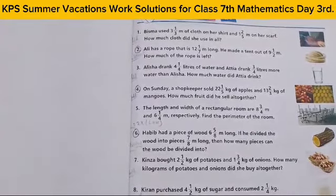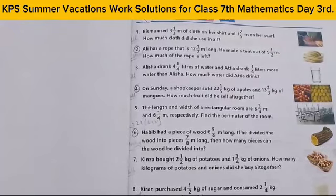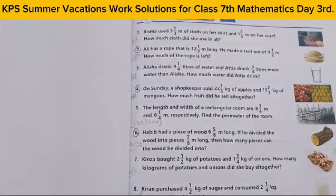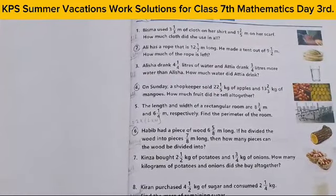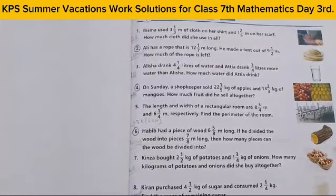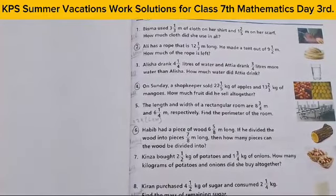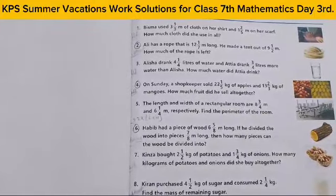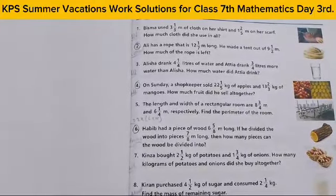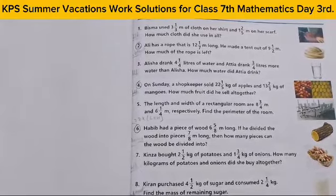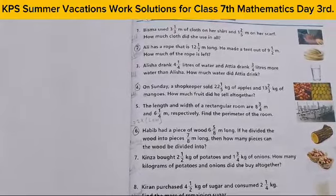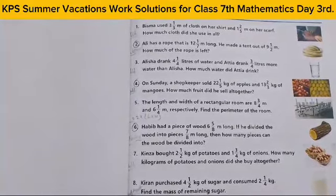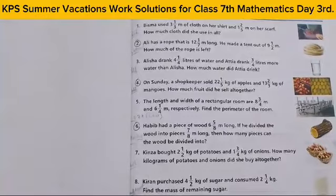آپ کا answer آ جائے گا۔ پھر آپ کے پاس question number 4: On Sunday a shopkeeper sold 22 and 1/5 kg apples and 13 and 2/3 kg of mangoes. How much fruit did he sell together? اتوار کے دن ایک دکاندار سیب بیچتا ہے اور آم بیچتا ہے۔ ان کا وزن آپ کو بتا دیا گیا ہے، اس نے total کتنا fruit بیچا آپ نے بتانا ہے۔ یہ بھی mix fraction form میں دی گئی ہے، پہلے fraction form میں convert کریں گے، پھر ان دونوں کو add کریں گے، آپ کے پاس total fruit آ جائے گا۔